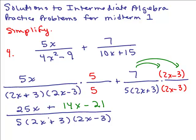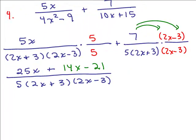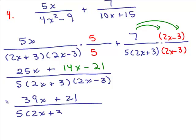Our next step would be to simplify the numerator so we can combine like terms. We've got 25x plus 14x will give us 39x plus 21 all over 5 times 2x plus 3 times 2x minus 3.